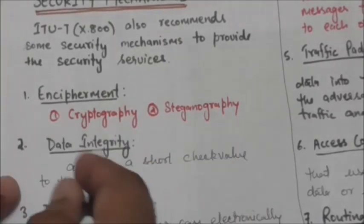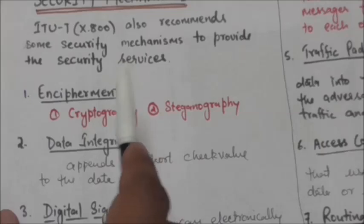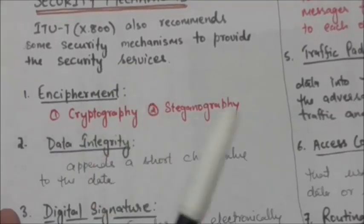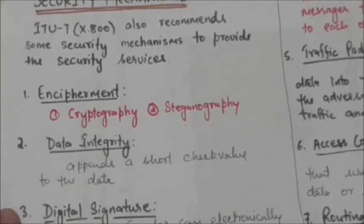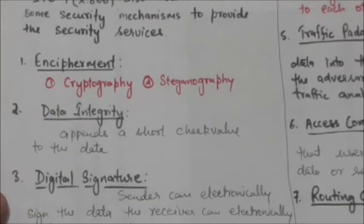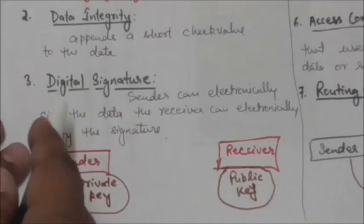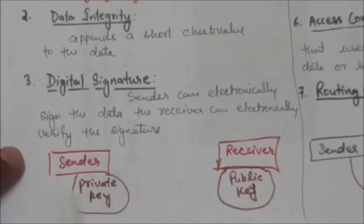The next mechanism is data integrity. This mechanism appends to the data a short check value, which is created from the data itself by a specific process. When the receiver receives the data and the check value, it creates a new check value from the received data and compares it with the one received. If the two check values are the same, then the integrity of the data has been preserved.